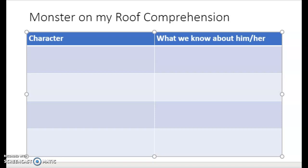Okay, now we are going to complete the chart — our graphic organizer. This is in your packet, or it's posted on Seesaw or Dojo. I will get you started and your job will be to finish the rest of the chart. We have two columns: a character column with four rows, and over here a column for what we know about him or her. My goal is for you to each come up with two supporting details that explain what we know about the character.